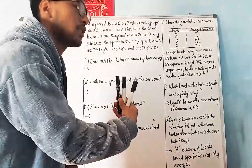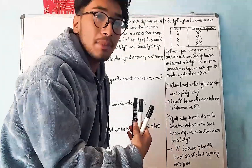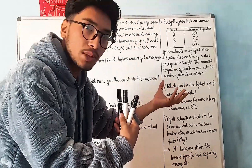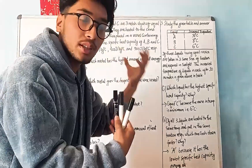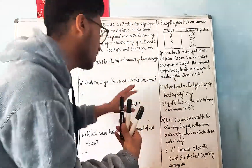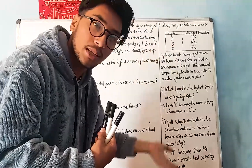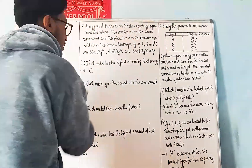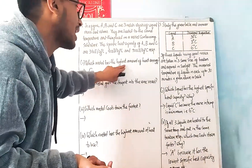Every metal has a certain amount of heat energy. Among these three, each has a different level. If specific heat capacity is higher, then at a certain temperature the heat energy stored is greater. The one with the highest specific heat capacity — C, with 900 — stores the highest amount of heat energy.